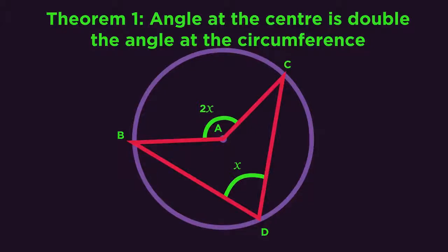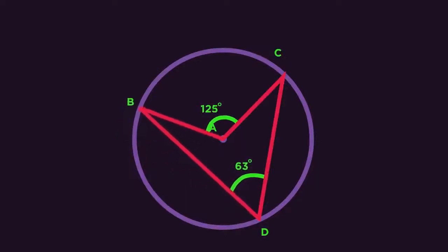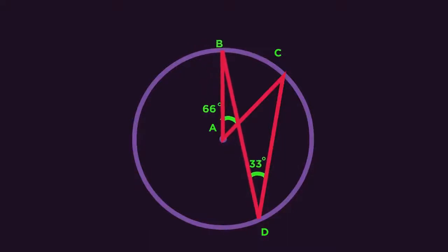Sometimes this theorem can be a little disguised. See what happens when I move point B around. So if you see this sort of setup, remember that the angle at the centre is double the angle at the circumference, even if it doesn't have the normal arrowhead shape.